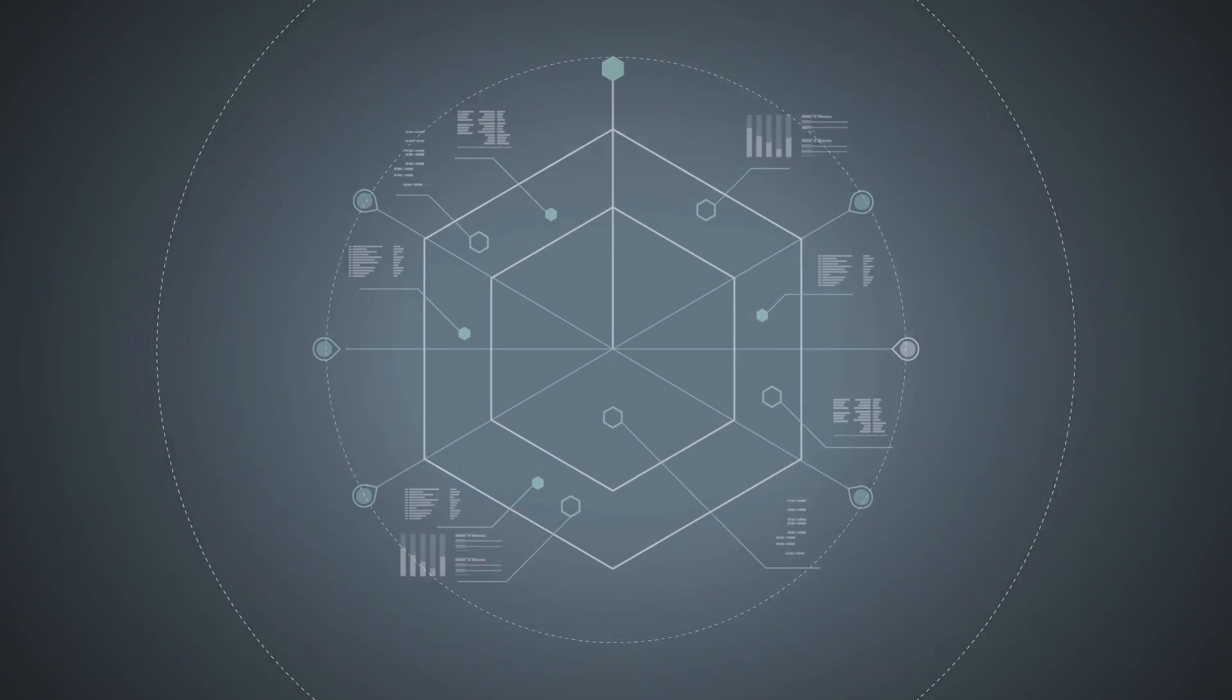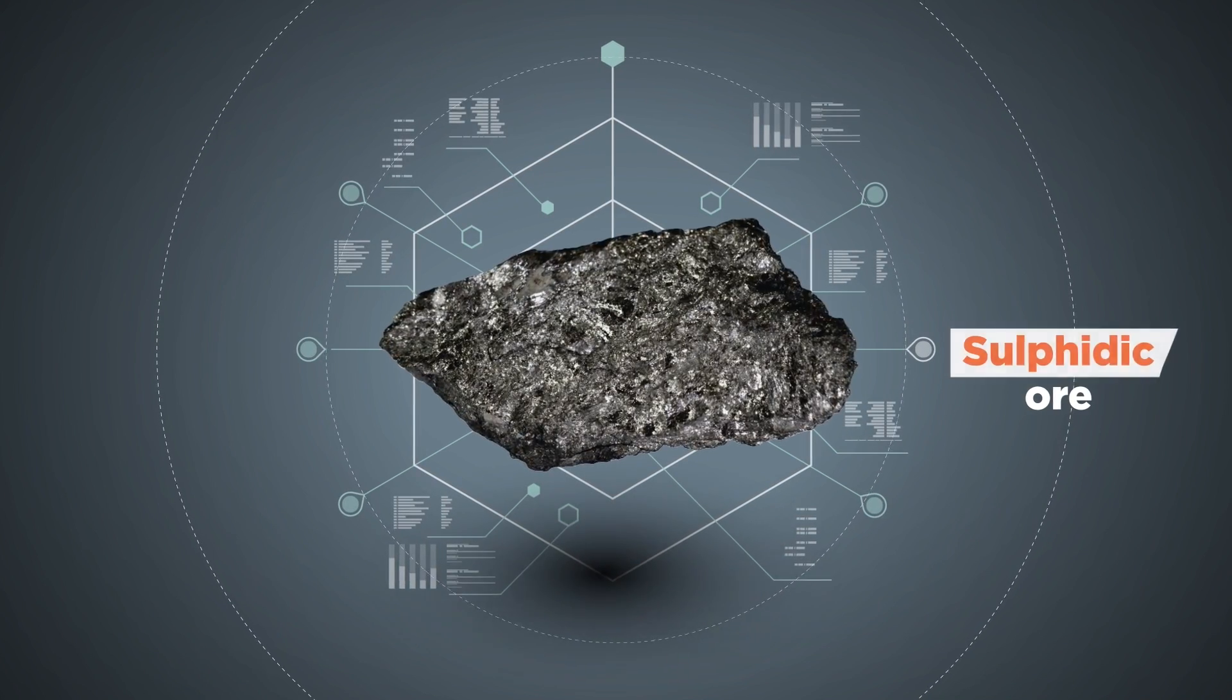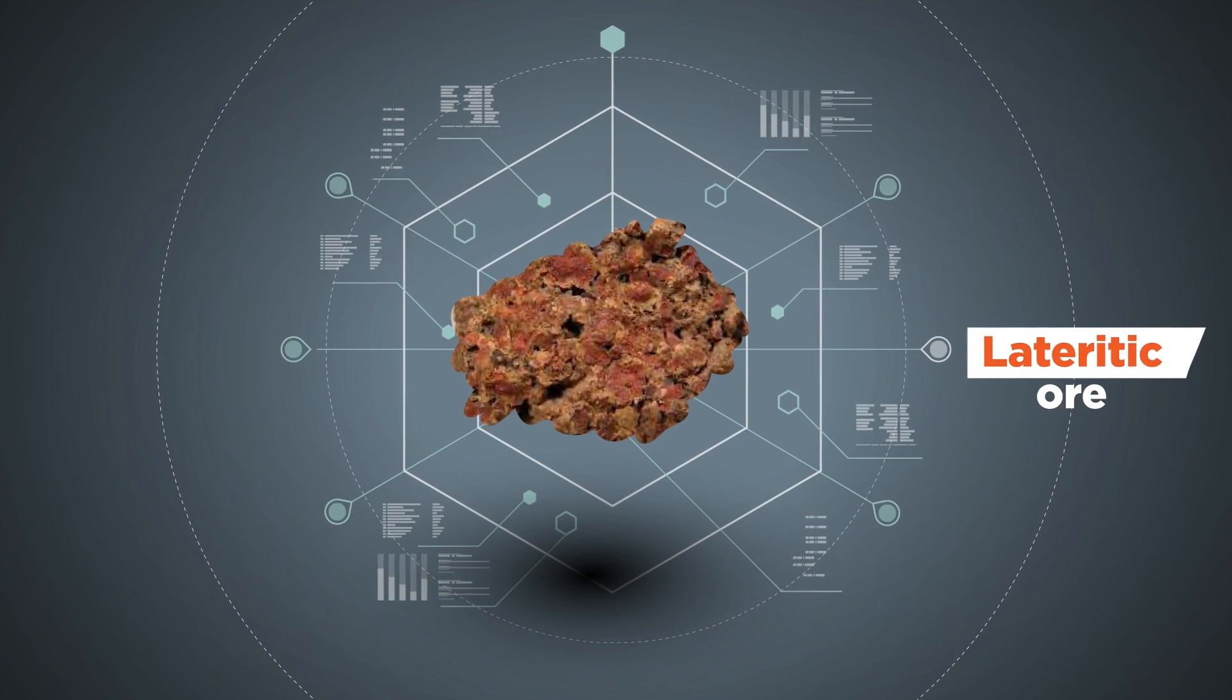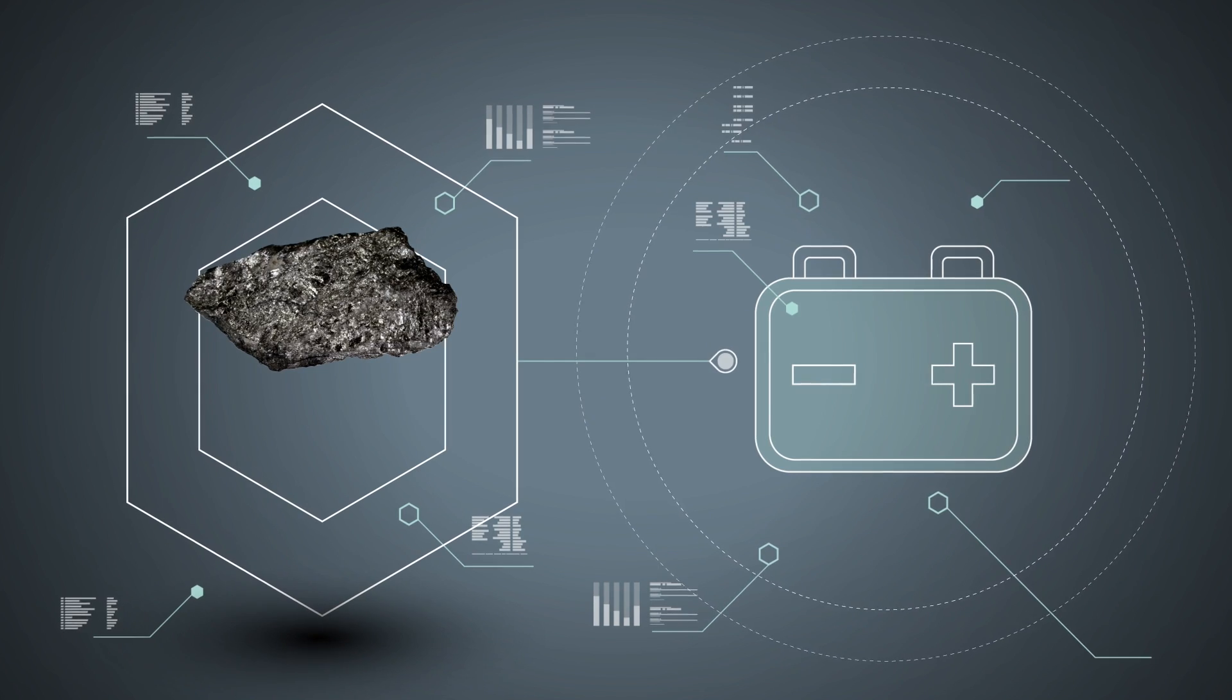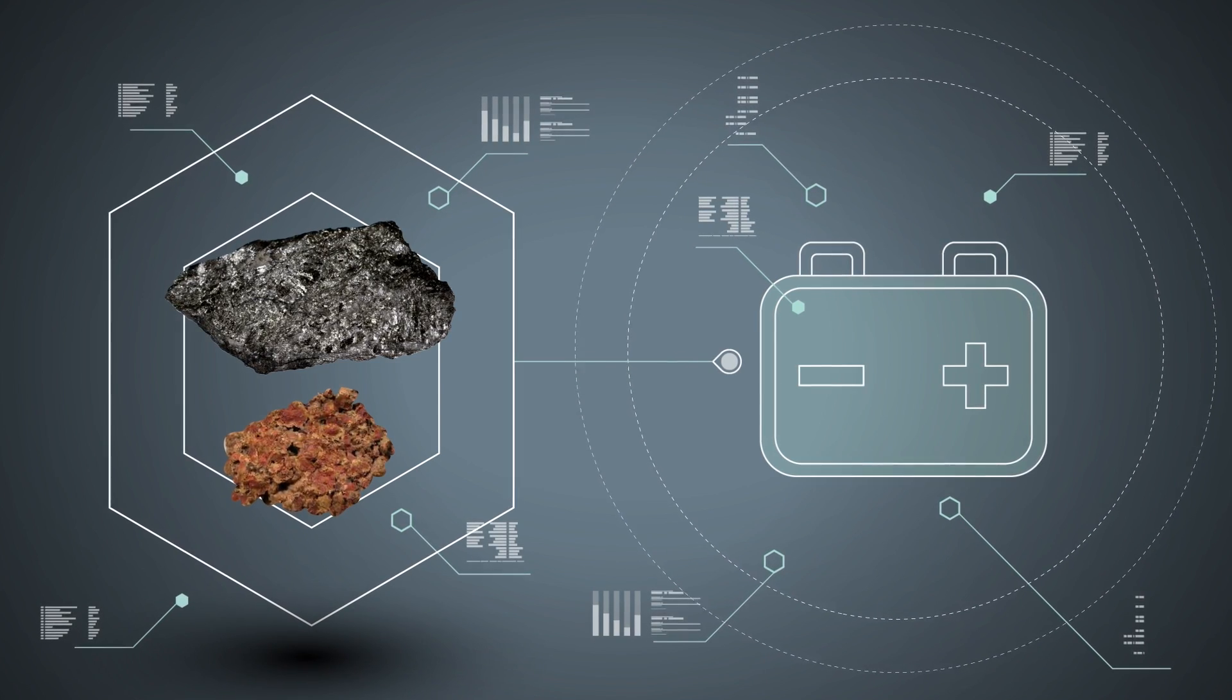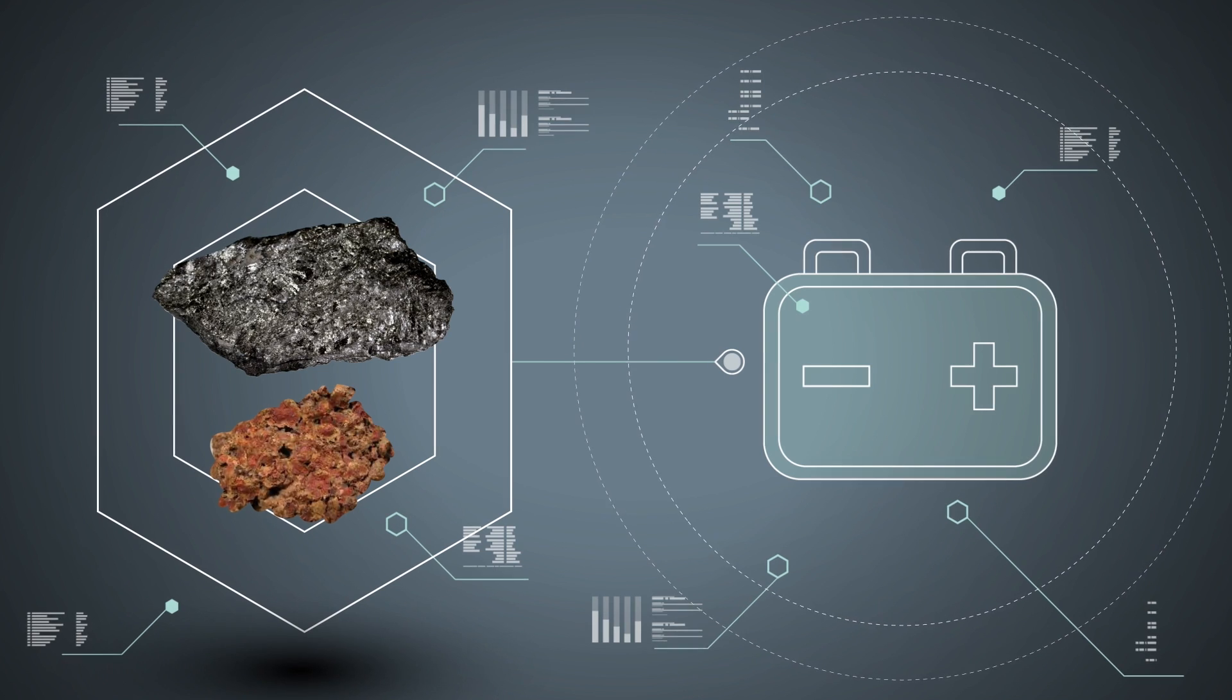There are two main types of nickel ores: sulfidic ores and lateritic ores, and they are converted into a wide range of different nickel products. There's a common misconception that only sulfidic ores are suitable for batteries, an increasingly important application of nickel. This is not true. Both ores can and are already converted into the nickel qualities suitable for batteries.